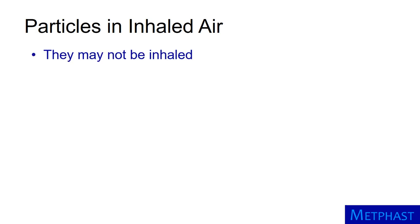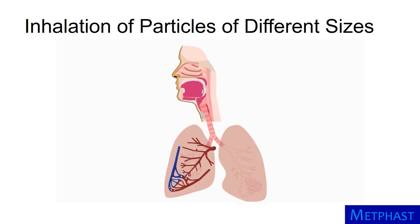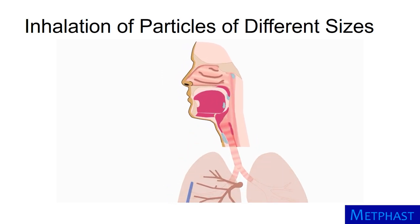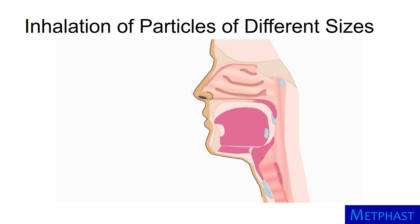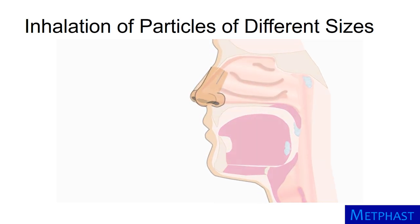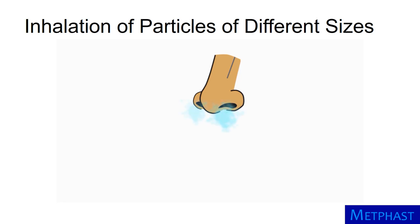If particles are present in air that is inhaled, it is possible that they may not move with the air into the human respiratory tract. Particle deposition in the human respiratory tract relates particle exposures to applied doses. A particle's size is the most important factor determining if and where a particle may deposit. Before we can even think about a particle depositing in the respiratory tract, we must know if a particle can even be inhaled into the tract.